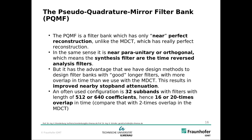The PQMF filter bank has only near perfect reconstruction, unlike the MDCT which has really perfect reconstruction. In the same sense, it is only near peri-unitary orthogonal, which means the synthesis filters are the time-reversed analysis filters — only almost but not quite. However, it has the advantage that we have a design method to design filter banks with good longer filters with more overlap in time than used with the MDCT. This results in improved nearby stopband attenuation. An often used configuration is 32 subbands with filters of length 512 or 640 coefficients, meaning 16 or 20 times overlap in time, compared to only two times overlap in the MDCT.